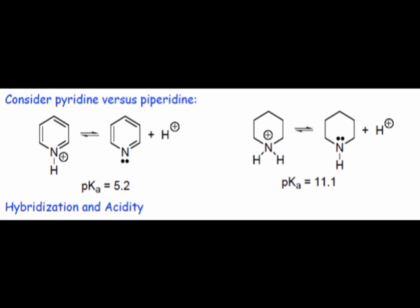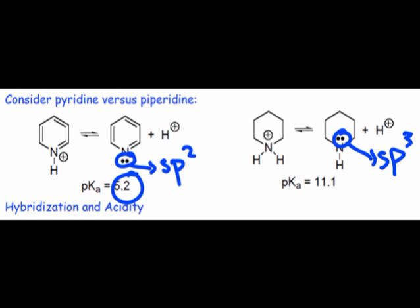Returning to the pyridine and piperidine equilibria, notice that the hybridization of the lone pair in pyridine is sp2, while the lone pair in piperidine is sp3 hybridized. Thus, we would expect pyridine to be less basic and more acidic than piperidine. The pKa's bear this out.